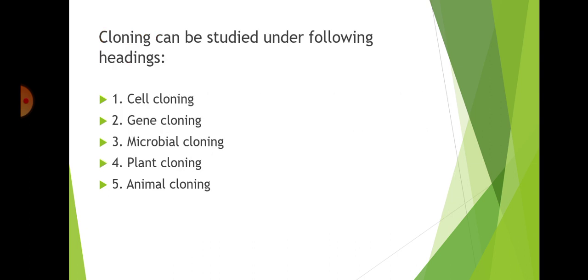Cloning can be studied under the following headings: cell cloning, gene cloning, microbial cloning, plant cloning, and animal cloning. Cell cloning: the culture of a cell to produce identical copies is called cell cloning. These cells are identical genetically, physiologically, and morphologically. Only a totipotent cell can normally produce its clone. Plant cells are totipotent but animal cells are not totipotent — this is a very important point.